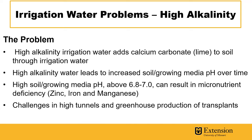High pH in soil and growing media above 6.8 to 7 can result in micronutrient deficiencies of things like zinc, iron, and manganese. This is a challenge in high tunnels as well as in greenhouse production of transplants and containers.